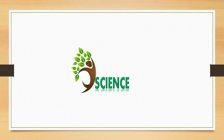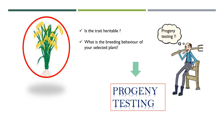Welcome everyone. Today I will be dealing with a very important topic of plant breeding — progeny testing. Without progeny testing, we cannot proceed in a plant breeding program. Suppose you have selected a plant by seeing its superior characteristics, but you cannot be so sure that you have selected the right one only by observing its phenotype. To proceed to the next step of evaluation, you need to know a few more things about this plant — whether the trait you have selected is heritable, and what is the breeding behavior of the selected plant.